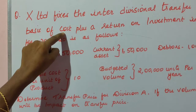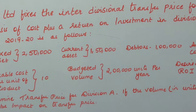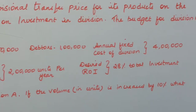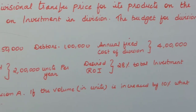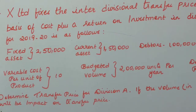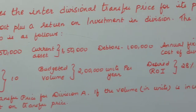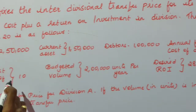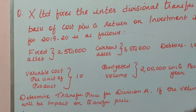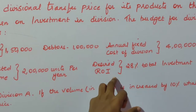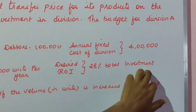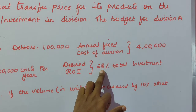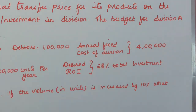Remember: under the cost plus method, transfer price is equal to total cost plus desired rate of return. We have the total cost, but we need to find the desired rate of return. The percentage on total investment is given, so we must first find total investment and then compute the desired return on that investment.